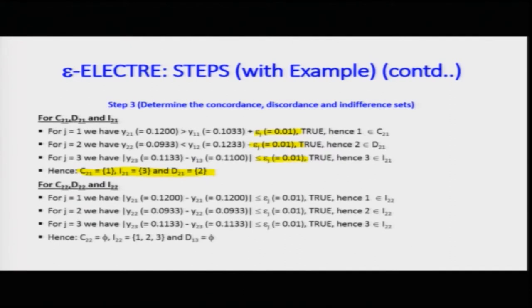When we go to C22, D22, I22, the comparison is amongst themselves, so obviously all criteria fall into the indifference set — because I am comparing 2 with 2, which is indifferent. In that case, the null set is C, the null set is D, and the I set has all elements J=1, J=2, and J=3.